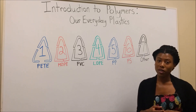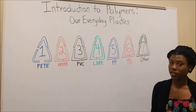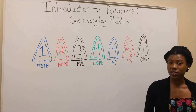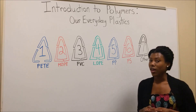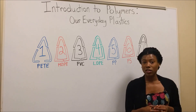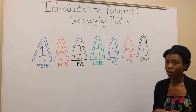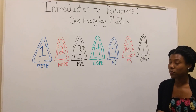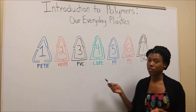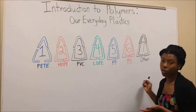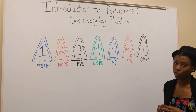It's important to note that not all polymers are plastics. However, all plastics are polymers. And most of the plastics that we encounter in our everyday lives can be identified by one of these seven symbols, also known as the Resin Identification Code.